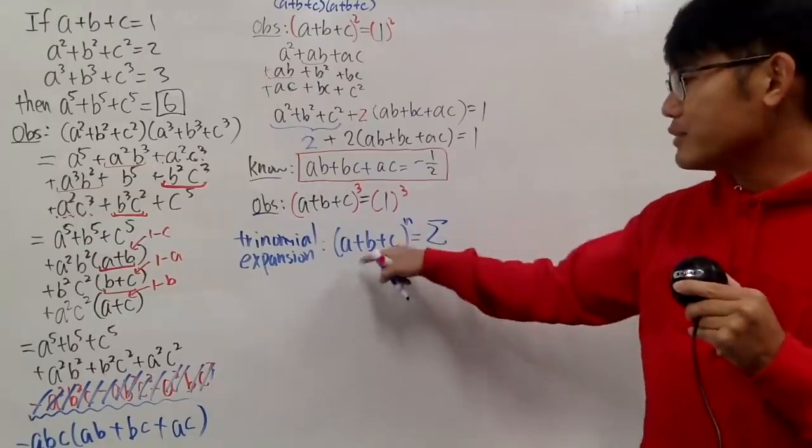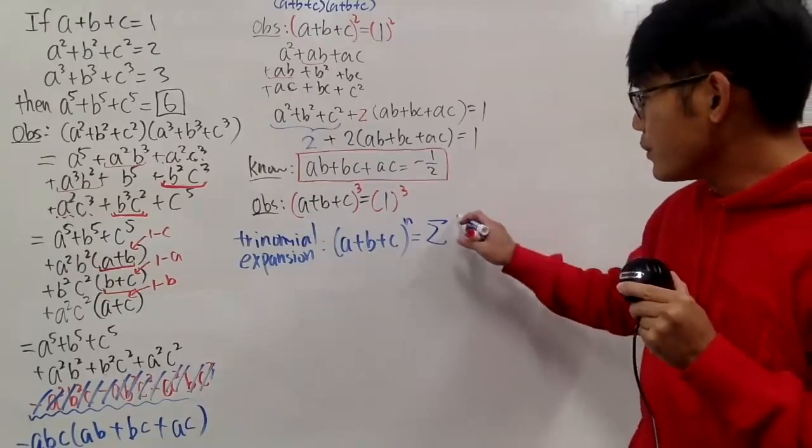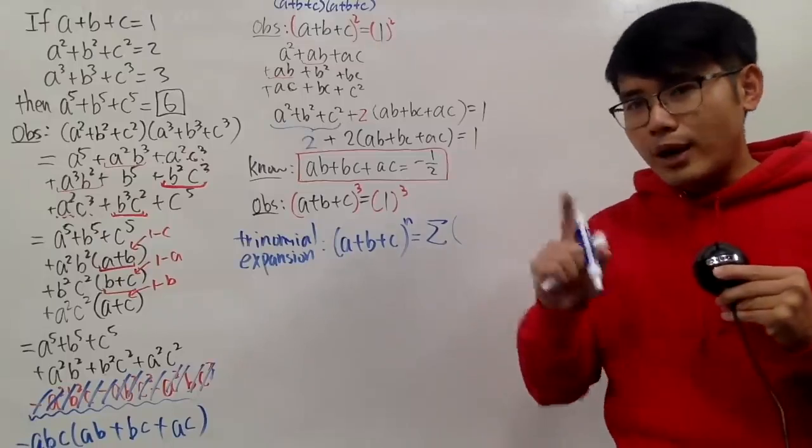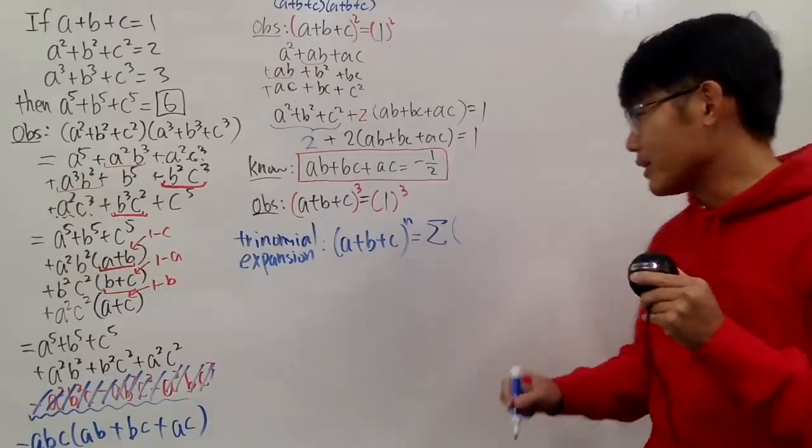And because you have three things, so you actually have to use three indexes. What you are going to do is, first of all, you are going to use the trinomial coefficients. Not the binomial coefficients, but the trinomial coefficients.